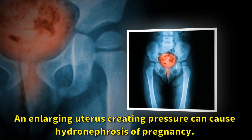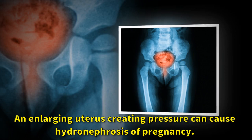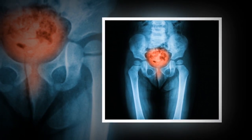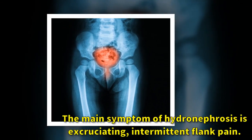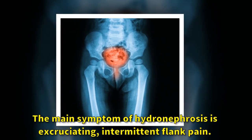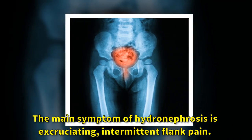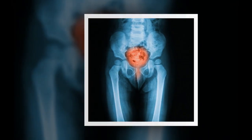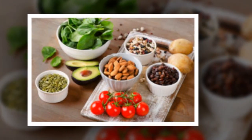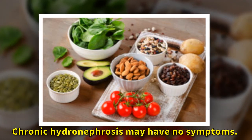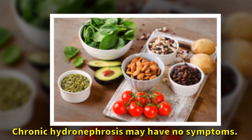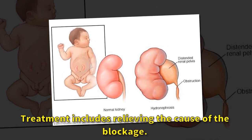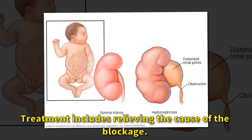An enlarging uterus creating pressure can cause hydronephrosis of pregnancy. The main symptom of hydronephrosis is excruciating, intermittent flank pain. Chronic hydronephrosis may have no symptoms. Treatment includes relieving the cause of the blockage.